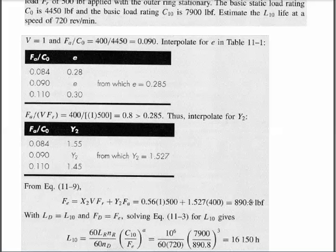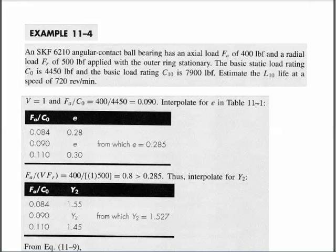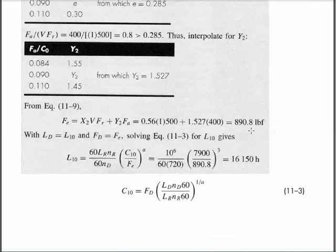Presuming 90% reliability, I can go back to my equation — even the one before we added reliability — and solve that equation for life. This bearing in this situation will last 16,000 hours. The key new thing we did was calculate the equivalent load of 890 pounds, which does the same amount of damage as the 400 axial combined with the 500 radial.